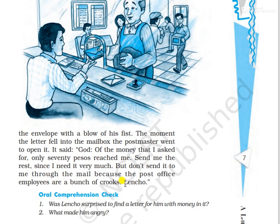Lencho wrote: don't send it through the mail because the post office employees are a bunch of crooks. He believed God couldn't make a mistake, so he concluded that God had sent the full hundred pesos but the post office workers had stolen thirty from him. He assumed that God had sent the complete amount and that the post office employees had taken thirty pesos.